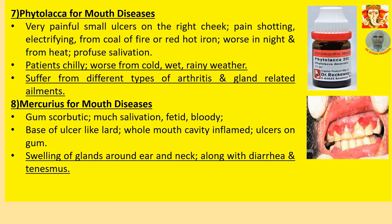Number 7: Phytolacca for mouth diseases. Very painful small ulcer on the right cheek. Pain shooting and electrifying, as if from coal of fire or red hot iron. Worse at night and from heat. Profuse salivation. Patient has chills and is worse from cold, wet, and rainy weather — these are general symptoms. Also suffers from different types of arthritis and gland-related ailments — these are concomitant symptoms featuring that Phytolacca is required.